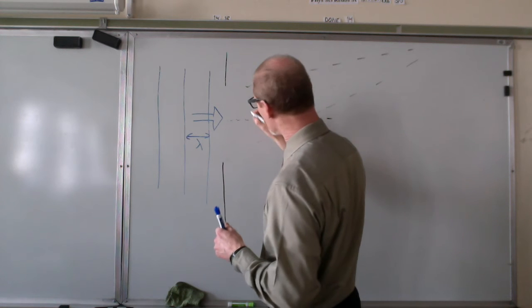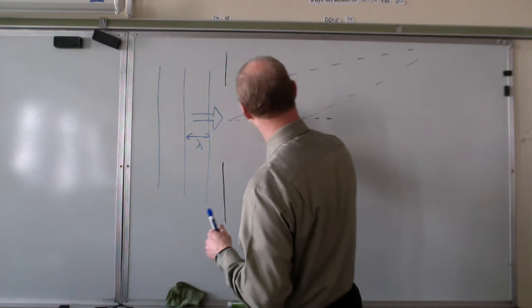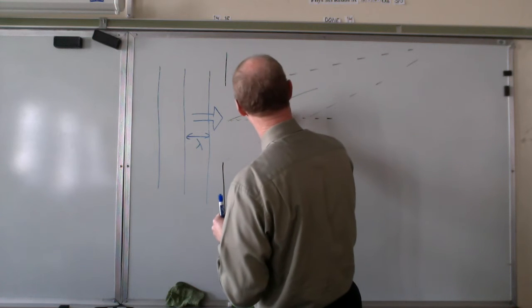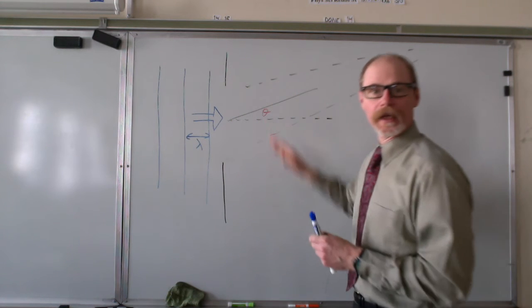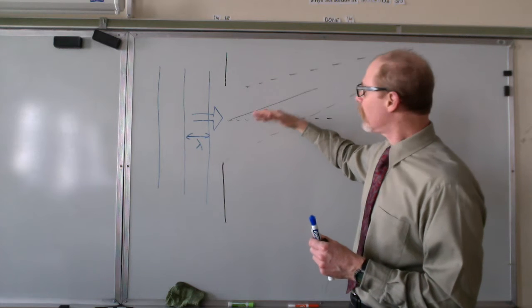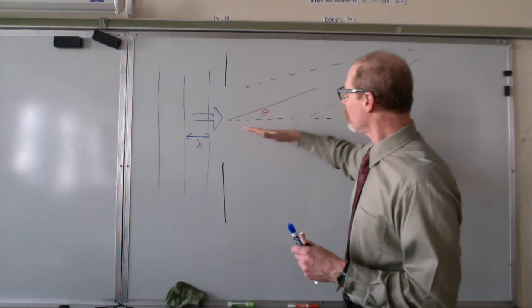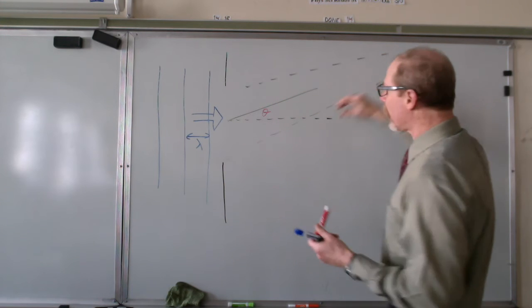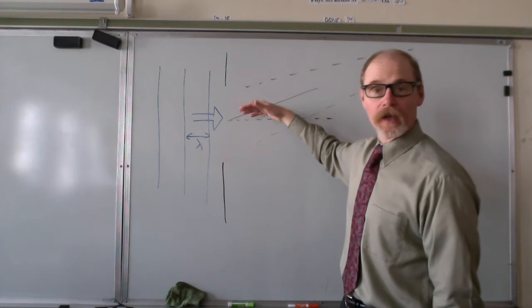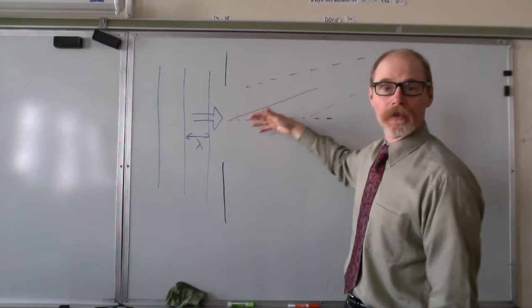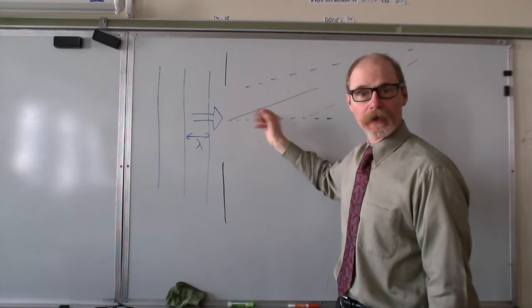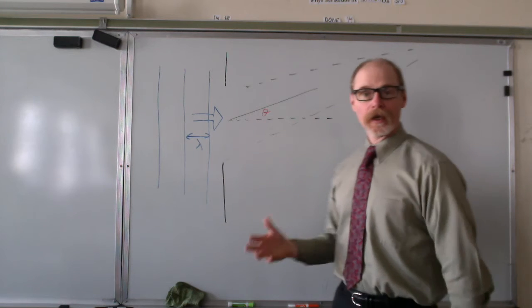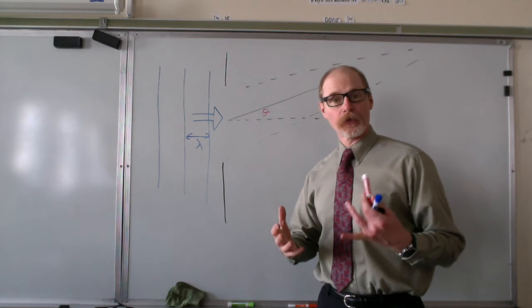So if this is the normal, then the angle theta is the direction that we're looking at, the deviation from the normal. And at some theta we will have wavelets constructively, and at some theta we'll have the wavelets destructively interfering. What I'd like to derive is the angle theta for destructive interference of the waves.